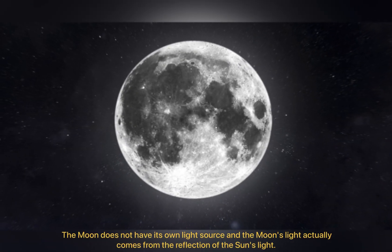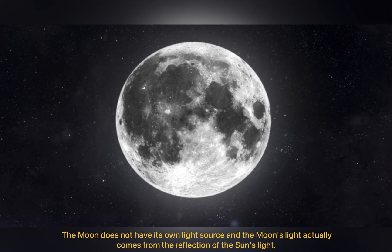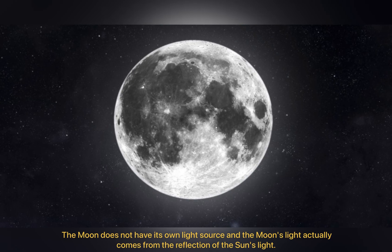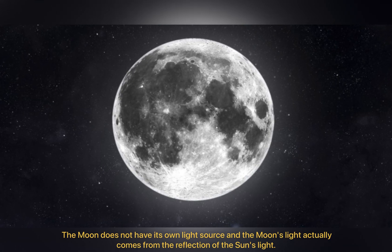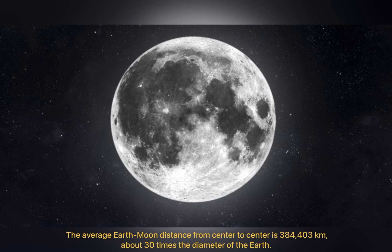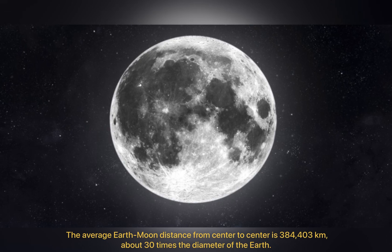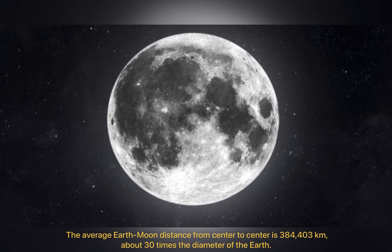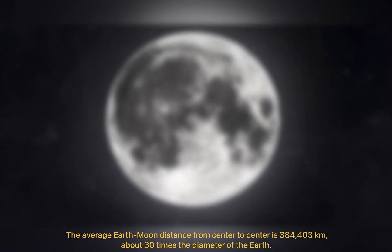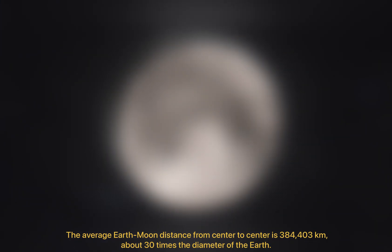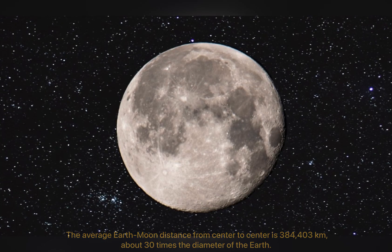The Moon does not have its own light source and the Moon's light actually comes from the reflection of the Sun's light. The average Earth-Moon distance from center to center is 384,403 km, about 30 times the diameter of the Earth.